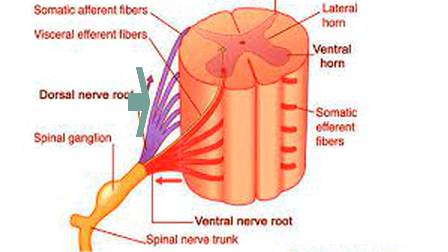Now, come to the dorsal root. Dorsal root, as the name suggests, is the posterior root. Its fibers are efferent fibers because they are sensory fibers, so they are going from the body to the brain, and they are called efferent fibers. So the dorsal root is posterior, sensory, and has efferent fibers. Keep in mind that these roots have both somatic and visceral fibers. Somatic fibers carry information about muscles and joints, and visceral fibers conduct messages from organs. If they are motor, they are called somatic efferent or visceral efferent; if they are sensory, they are called somatic efferent and visceral efferent.